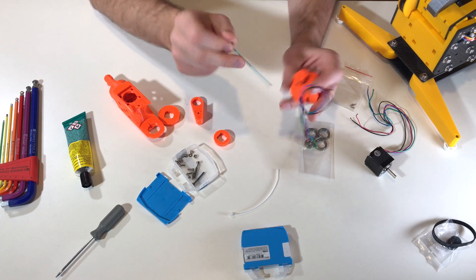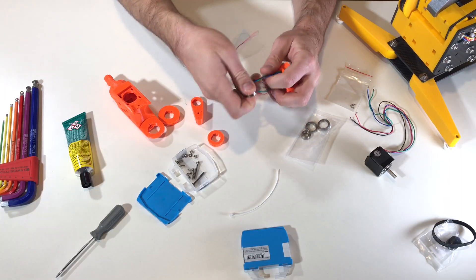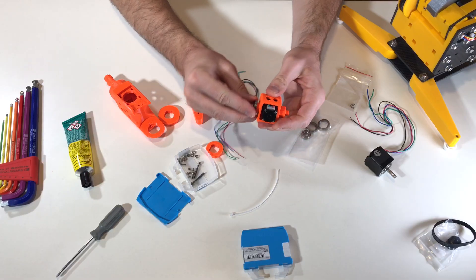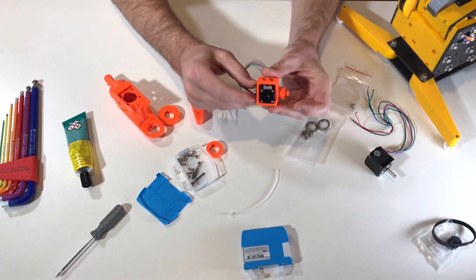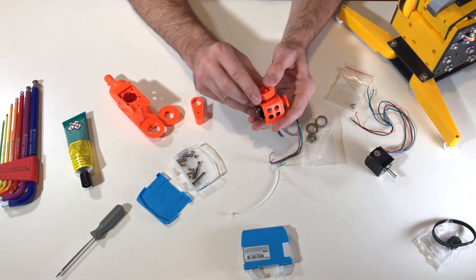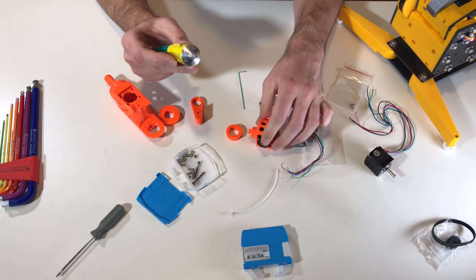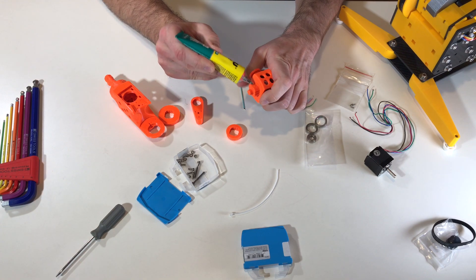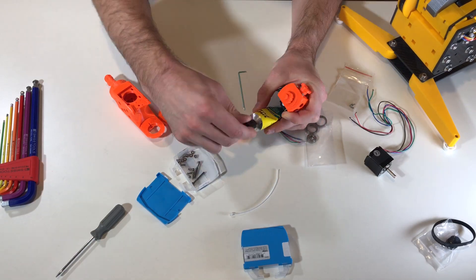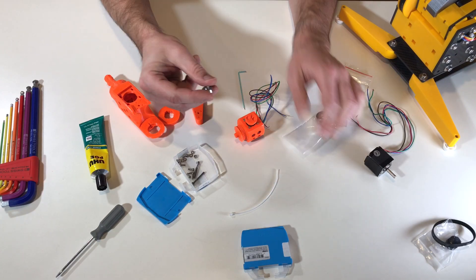This one goes on top. Now this bearing goes just here. Like this. And this one we can either glue it or leave it like this because it's quite a tight fit. And I will just put a small amount of glue. A little bit here and a little bit here. Now the second bearing which goes here.